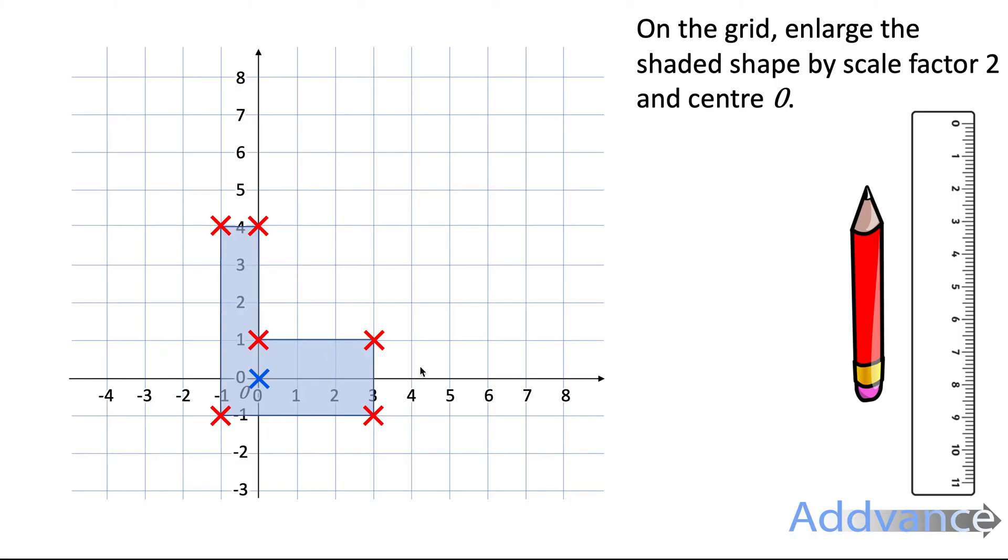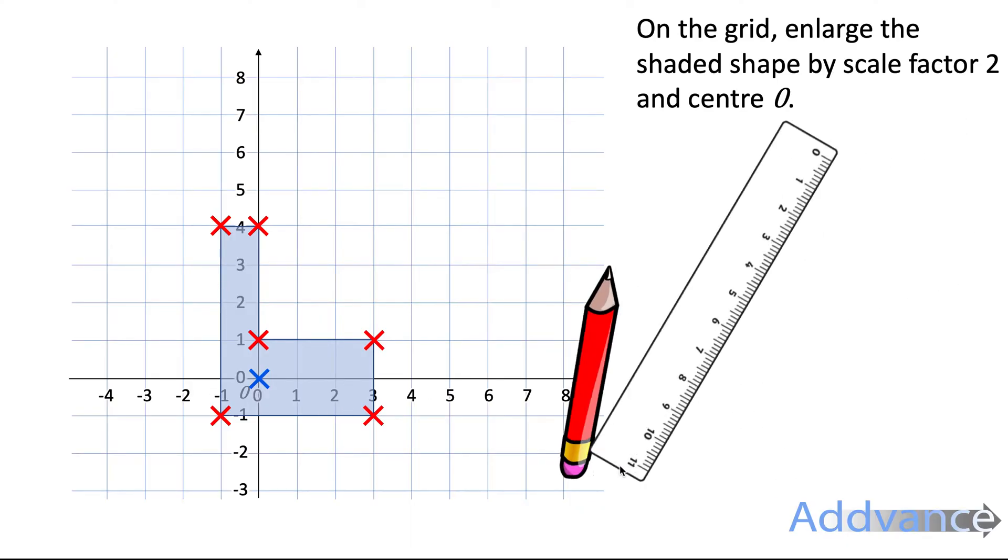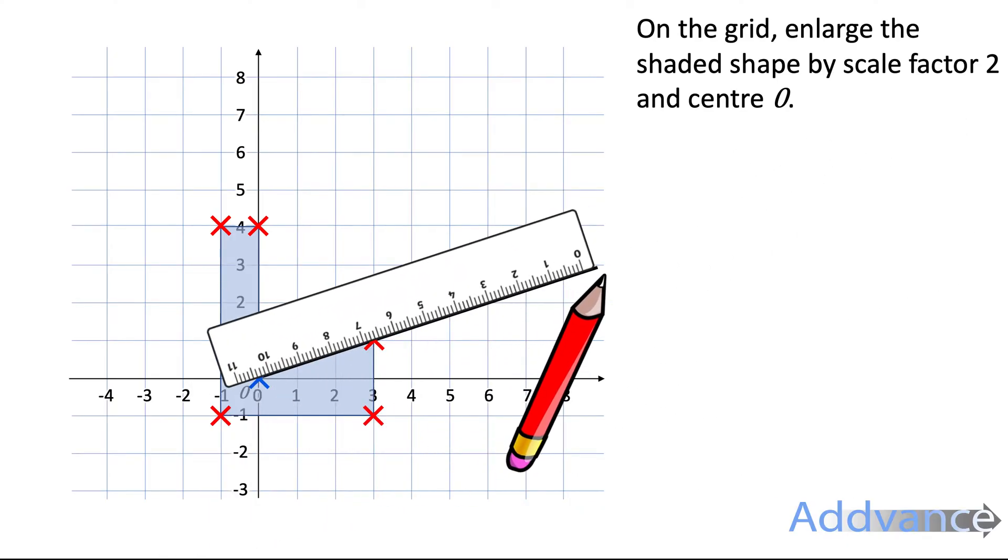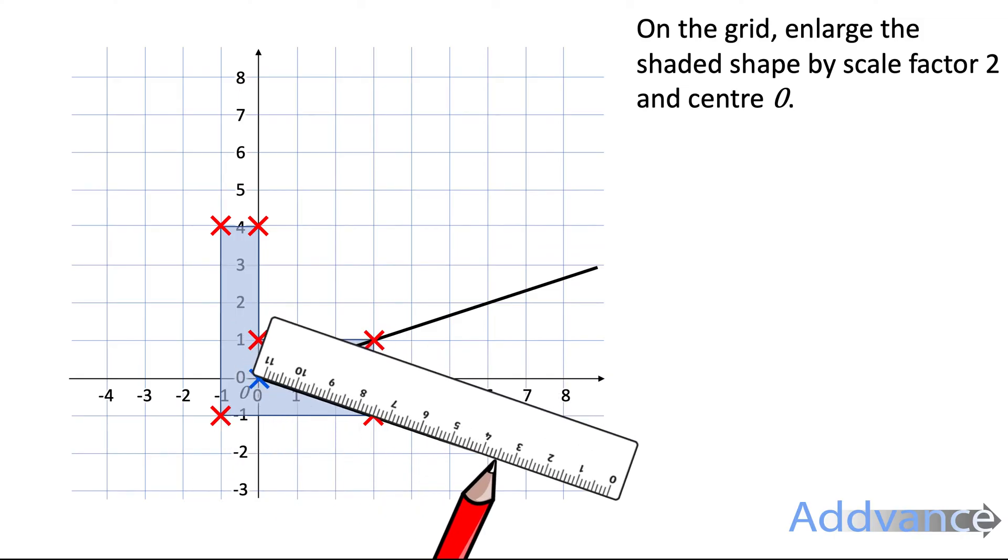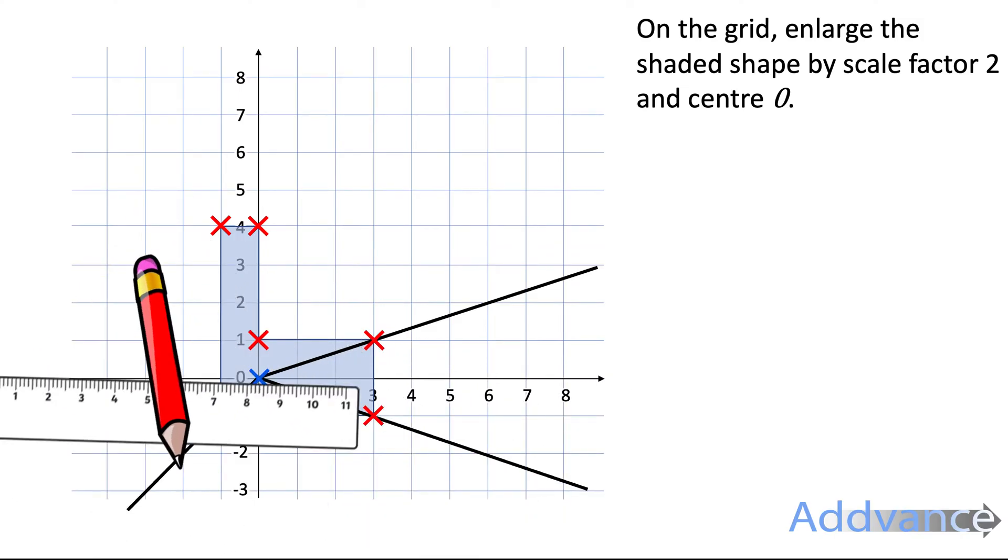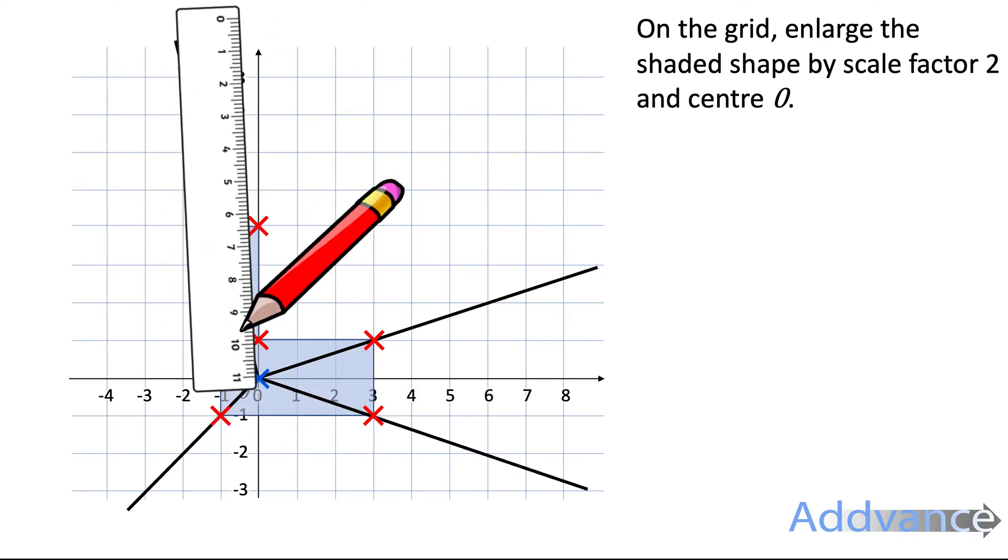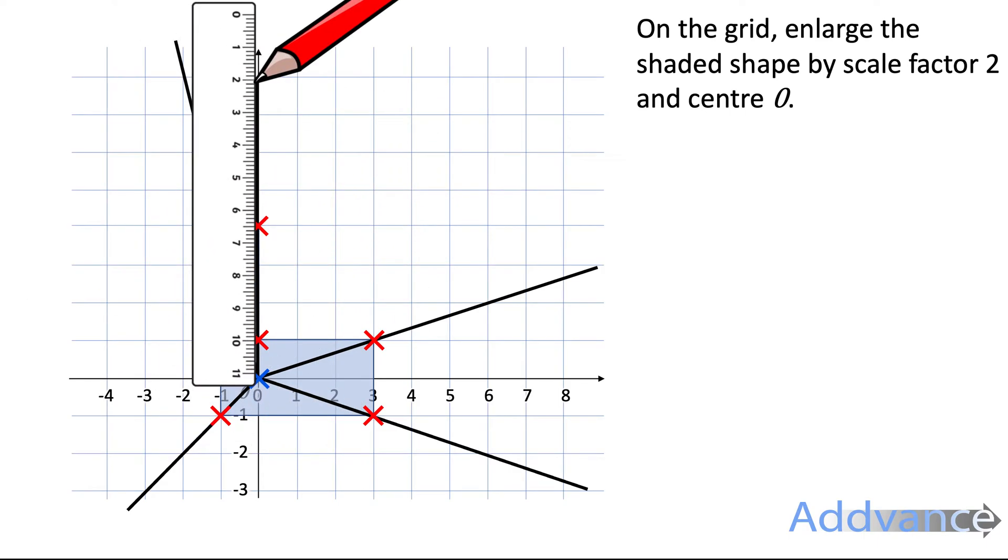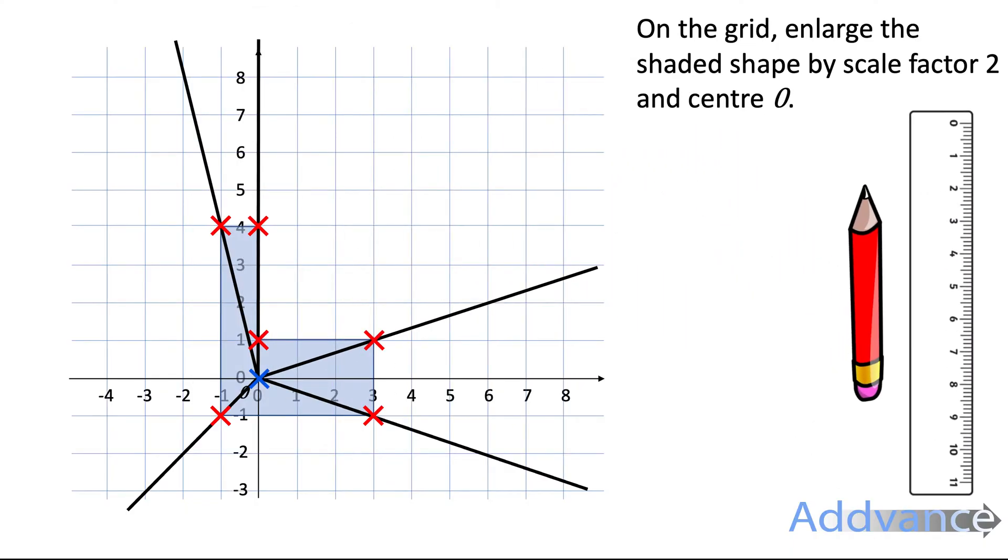So we're going to put a cross at 0,0 and then we're going to consider all of the corners of this shape. We take our ruler and pencil and draw straight lines from the centre of enlargement through the corners of the shape. Keep going further than the corners and make the lines long. Notice the last two corners line up so you only need to draw one line for them.